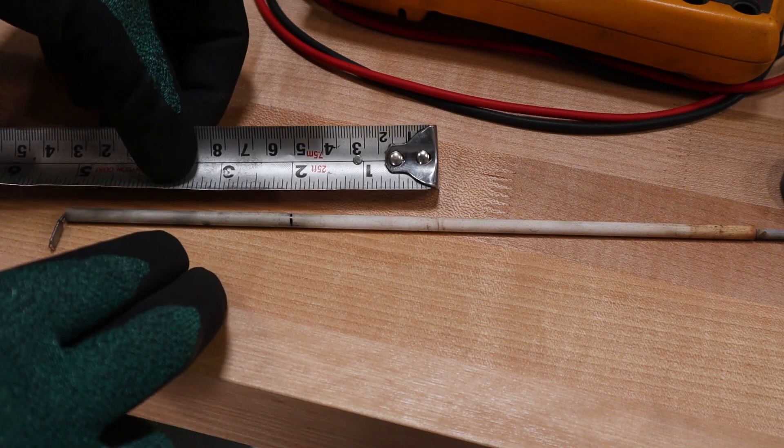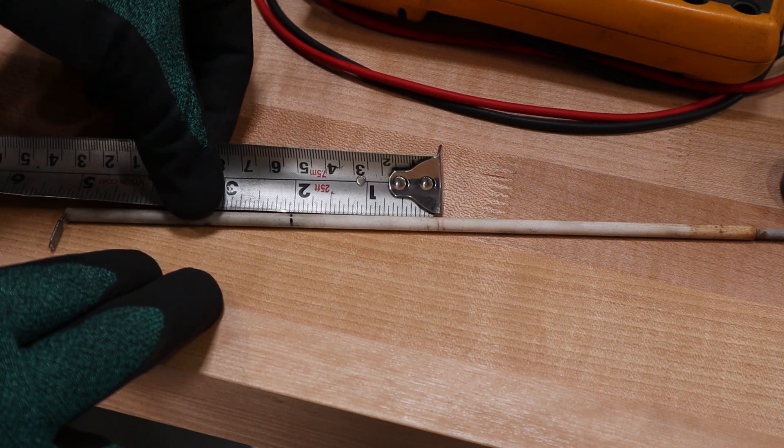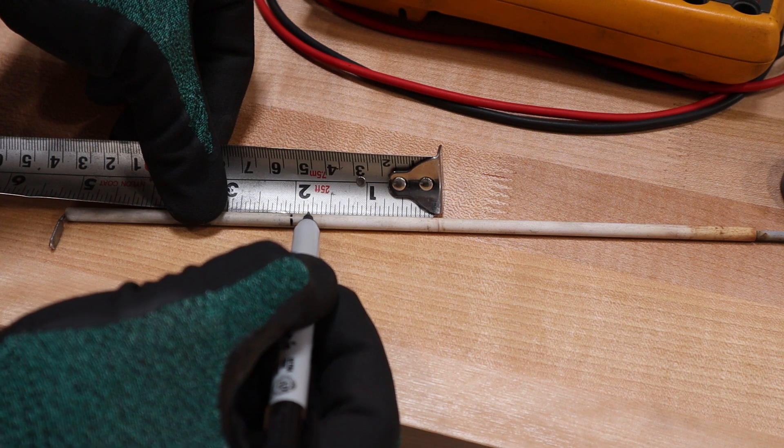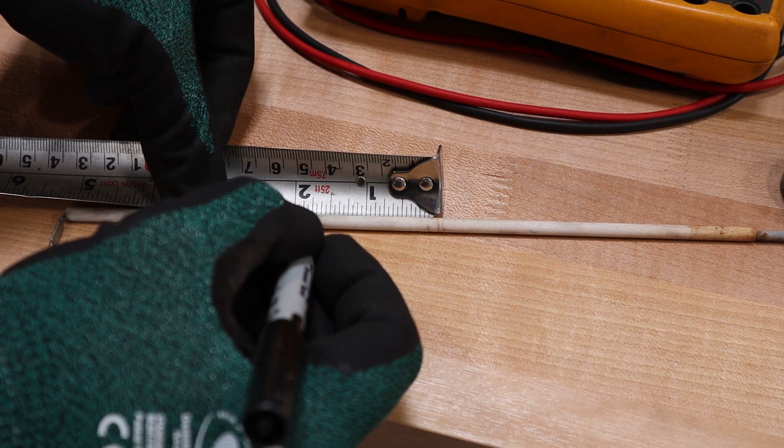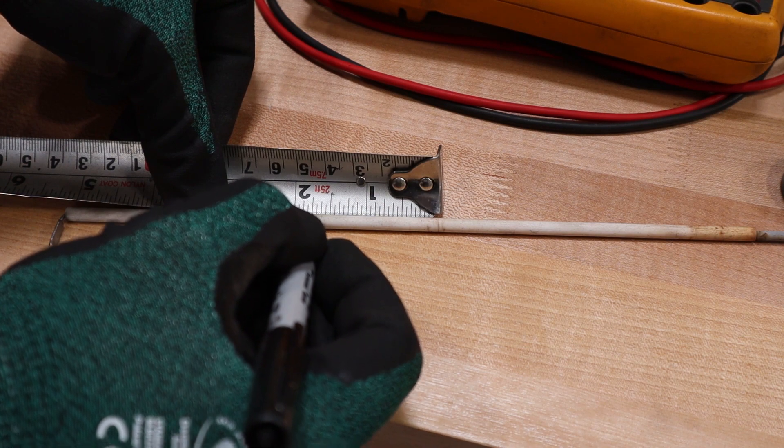All right, so now that we have the electrode out of the generator, we just want to take that mark and actually mark between an eighth and a quarter inch into the burner. So we're actually going to cut the difference and just do three sixteenths right like that.